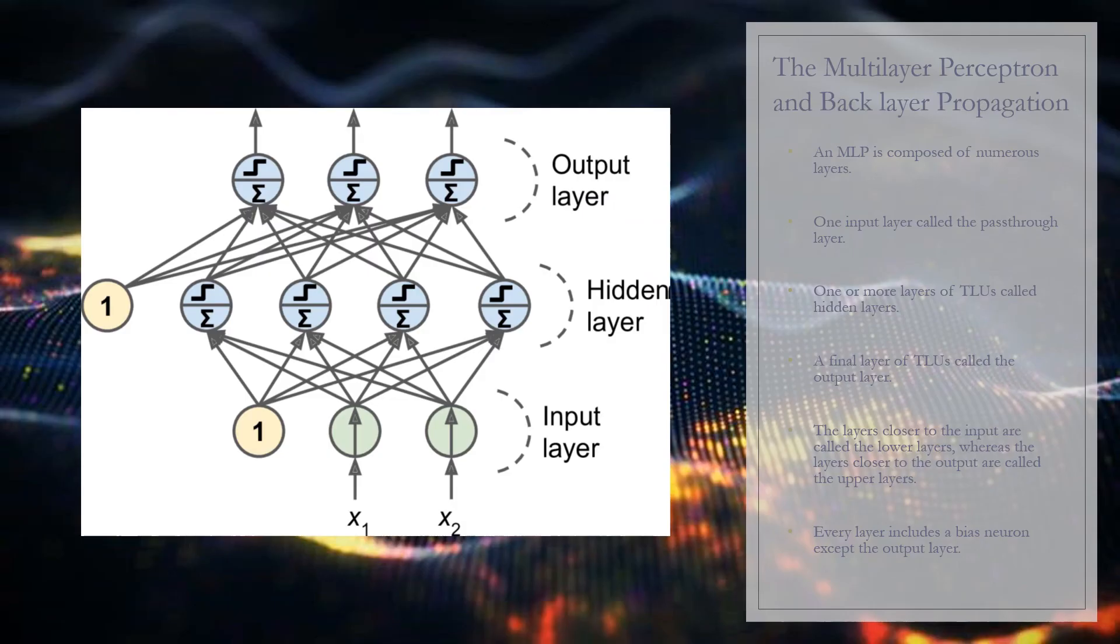A multi-layer perceptron, or an MLP, is composed of one input layer called a passthrough, one or more layers of TLUs called hidden layers, and one final layer of TLUs called the output layer. The layers close to the input are usually called the lower layers, and the ones close to the outputs are usually called the upper layers.